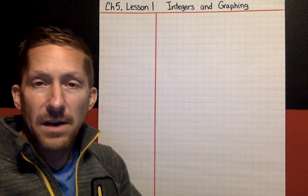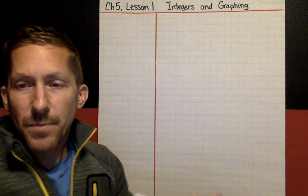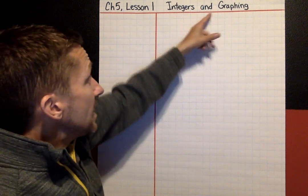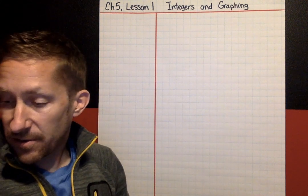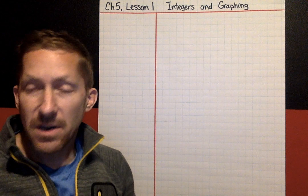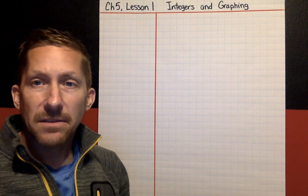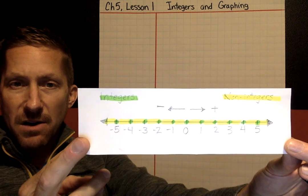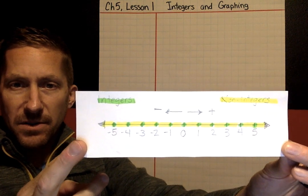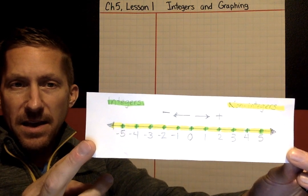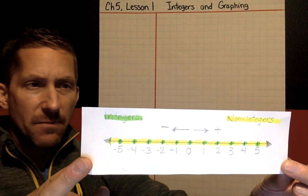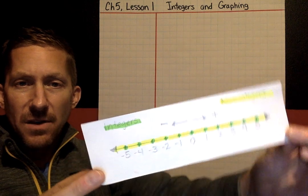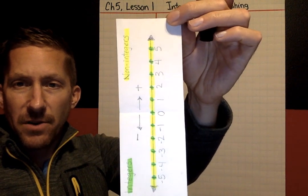Grab your note page and let's learn about integers and how to graph integers. Remember in the lab, which you've already done, you learned what integers are — positive and negative whole numbers, not the numbers in between. Also remember that we talked about how number lines can be horizontal or they can also go vertical.